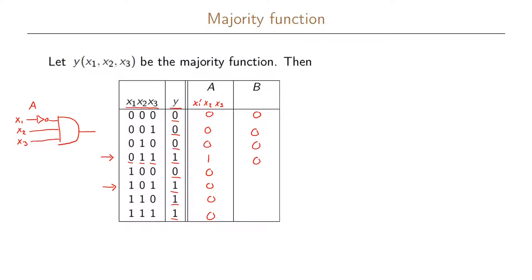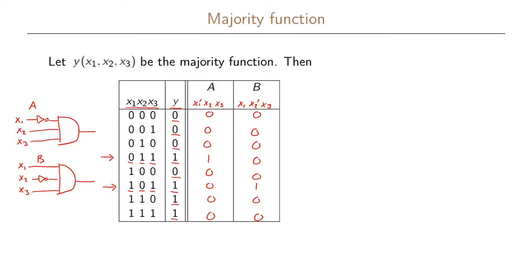In the next step we look at the second one in our truth table and define a similar function extracting that particular entry. This function can be written as x1 x2 prime x3, because x1 must be 1, x2 must be 0, and x3 must be 1. We realize this similarly: x2 goes into an inverter first, then x1, x2 prime, and x3 are fed into an AND gate, giving us part B.